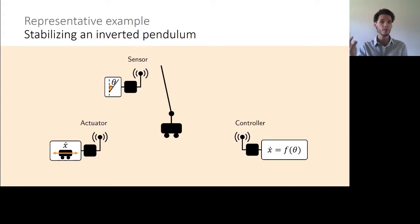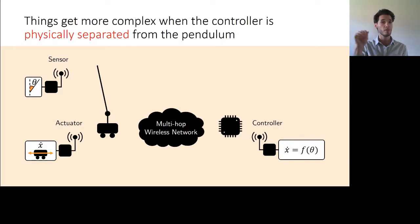This is a rather simple mechanical system where we aim to stabilize a pole in an upright position on a cart that can move left and right. This is a reasonably well understood problem. However, it does get significantly more challenging when we start separating the physical system we are trying to control from the